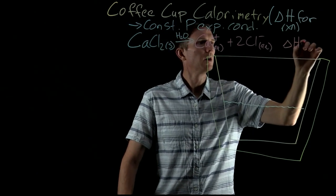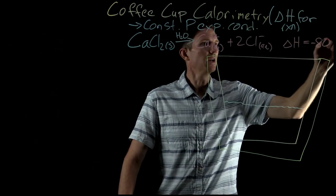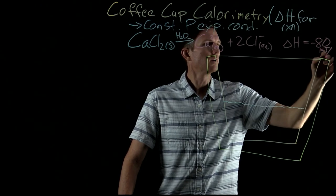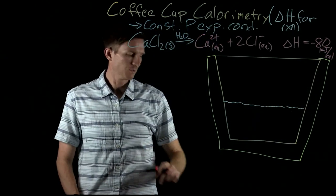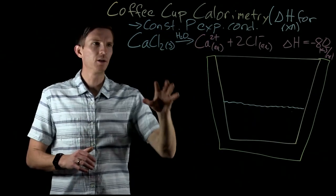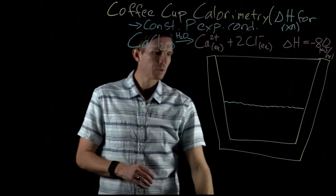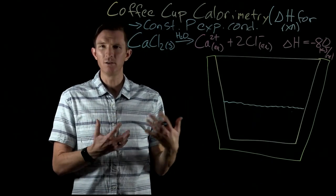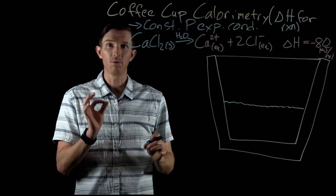And what we're told here is that the enthalpy is negative 80 kilojoules per mole. Okay, so we have our reaction occurring here. We're dissolving our calcium chloride. So now what is this going to do to our solution and how do we define a couple things?